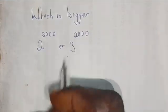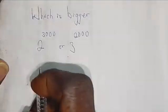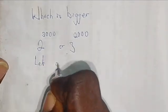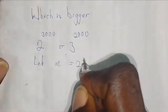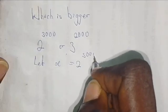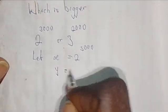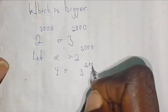To achieve that, we'll be taking the logs of both sides. Let x equal 2 raised to the power of 3000, and let y equal 3 raised to the power of 2000.